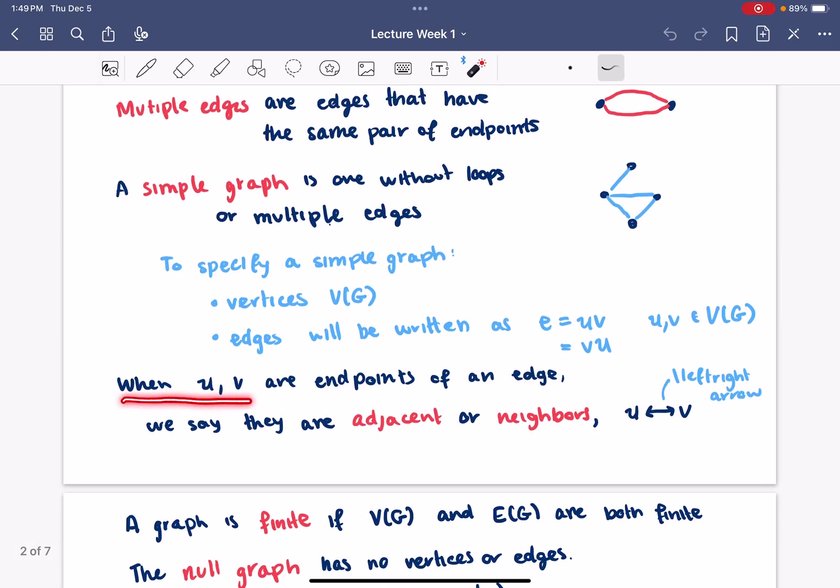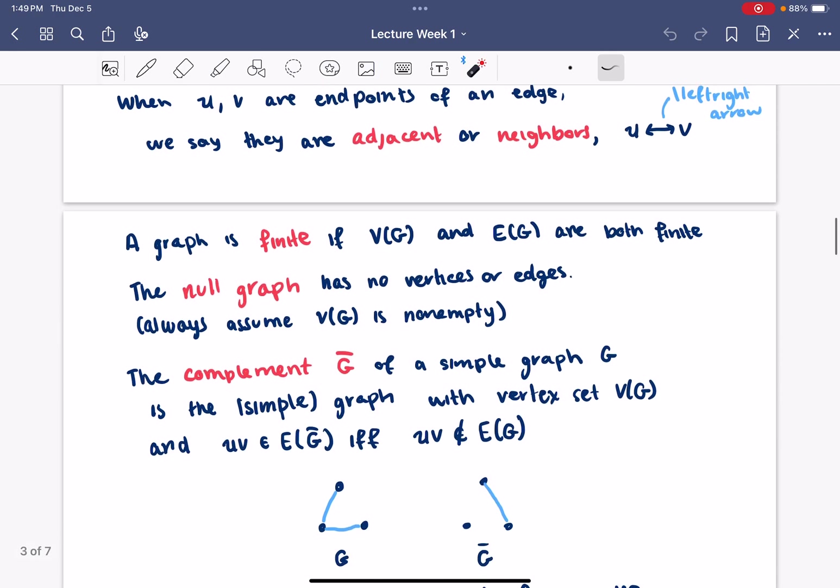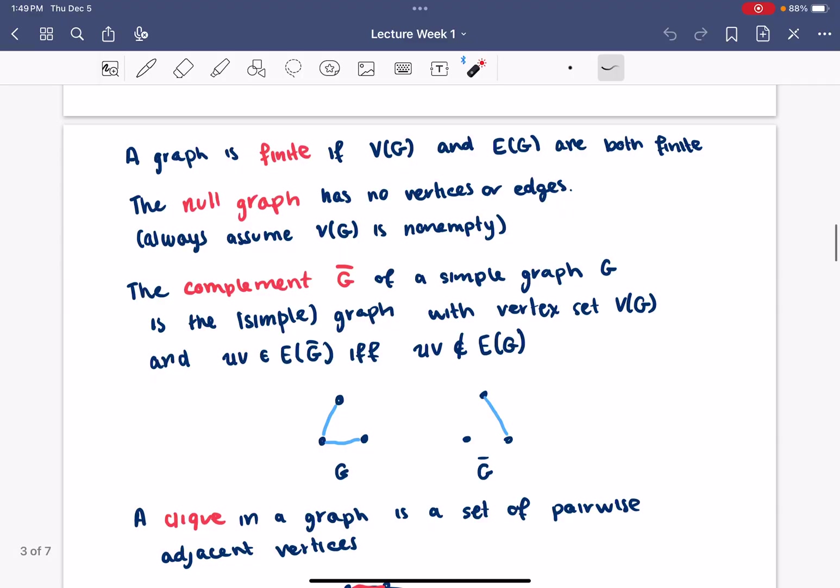When u and v are endpoints of an edge, we say that they are adjacent or neighbors. A graph is finite if the vertex and edge sets are both finite. The null graph is the one with no vertices or edges.